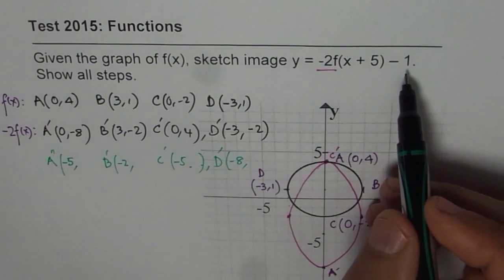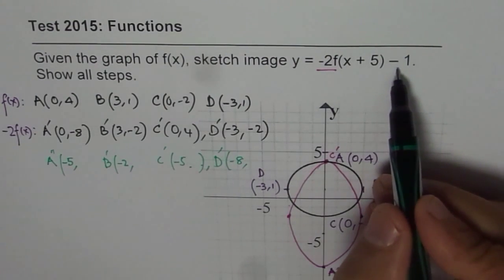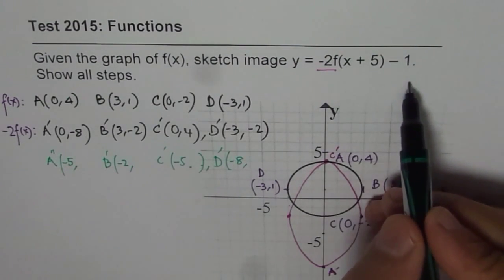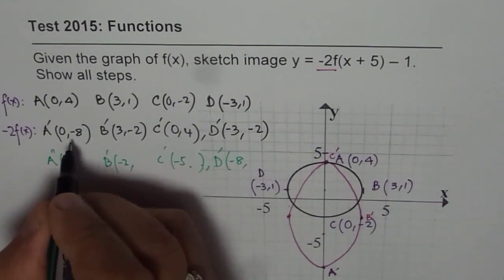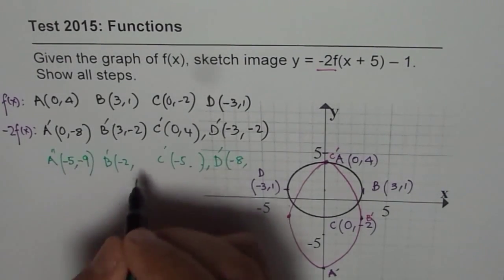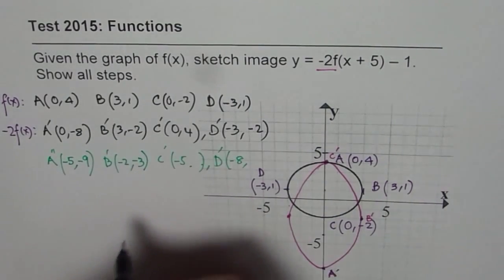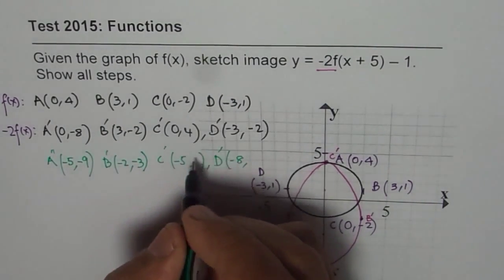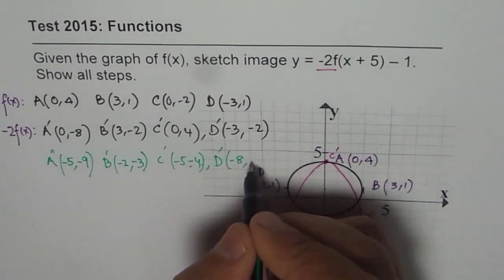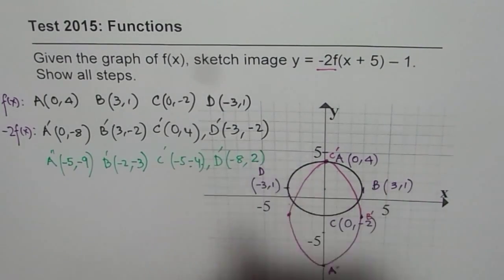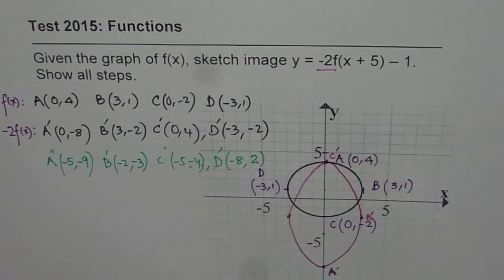As far as the Y location is concerned, the coordinate points will be 1 unit down. That means minus 1. So minus 1 of minus 8 will be minus 9. Here it will be minus 3. In this case, it will be 3. And here it will be minus 3. So that is how the points are going to be.